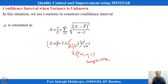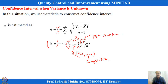Instead of σ, I use S. When σ is known, Z_{α/2} is used in the formula. When the population variance or standard deviation σ is unknown, it is replaced by the unbiased estimator S, and in that case the T-distribution is used instead of the Z-distribution.